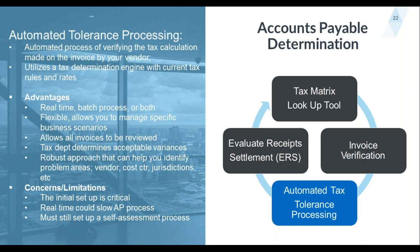With automated processing, you're taking away that manual lookup and manual spreadsheet review, allowing automated systems to review and determine what taxes should be paid. It allows all invoices to be reviewed — not just the top 10% or anything over $10,000. It allows the tax department to determine acceptable variances. If it's off by a dollar or two, let it go; if it's off by $10,000, check it. You can identify problem areas by vendor, cost center, or jurisdiction. The initial setup is critical — you want to make sure what you're purchasing, cost centers, and jurisdictions are all correctly identified upfront, because garbage in, garbage out. Real-time integration could also slow the AP process.